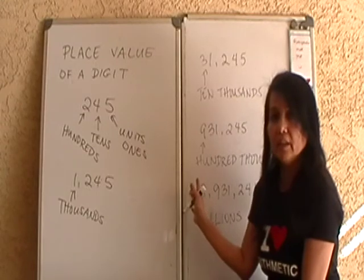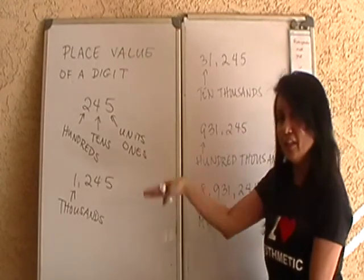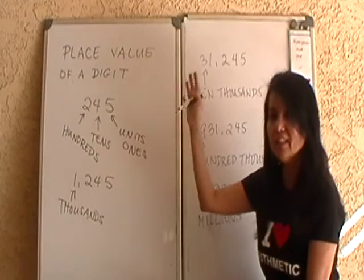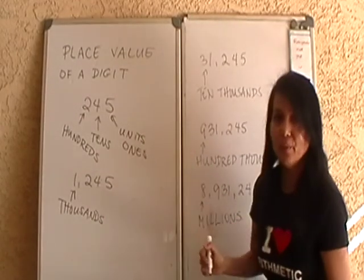And then after that, you have 10 millions, 100 millions, and then you have billions, then you have 10 billions, 100 billions, and so on and so forth.